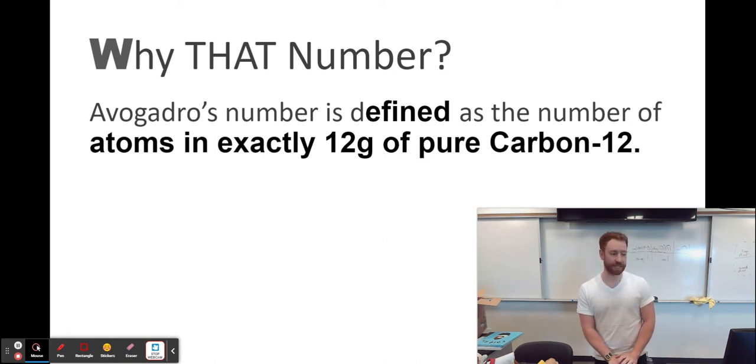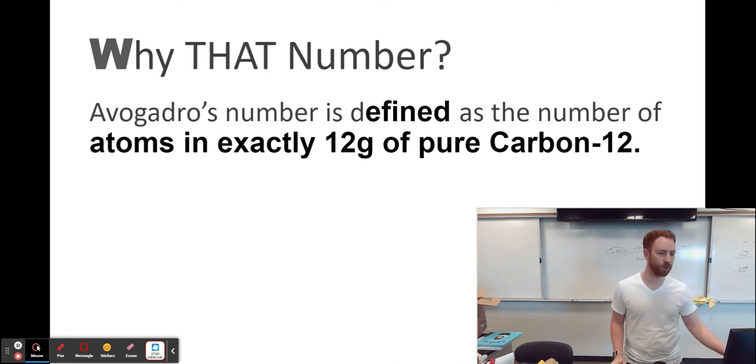it was defined as the number of atoms in exactly 12 grams of pure carbon-12. Now, I'm forgetting exactly what the reason was behind that definition. I'm not sure if maybe carbon-12 is just really easy to isolate and purify at the time or what the logic was there. But in 12 grams of carbon-12, there are 6.02 times 10 to the 23rd atoms. And that's where the number of the mole came from.